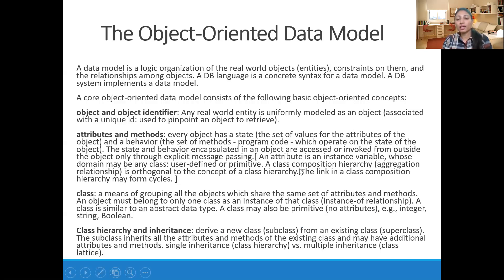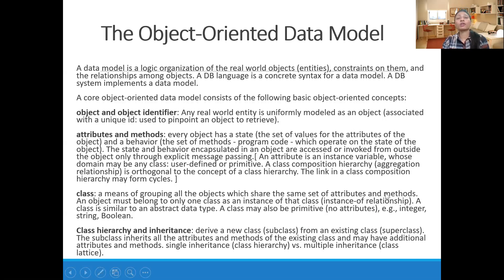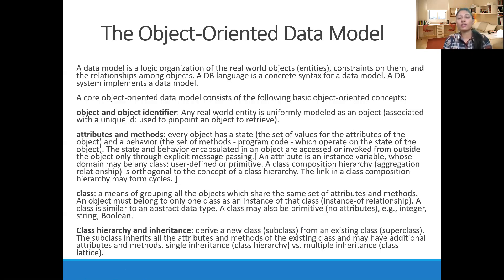An attribute is an instance variable whose domain may be any class — user-defined or primitive. A class composition hierarchy, or aggregation relationship, is orthogonal to the concept of class hierarchy, and the links may form cycles. A class is a means of grouping all objects that share the same set of attributes and methods. An object must belong to only one class as an instance of that class. A class is similar to an abstract data type.